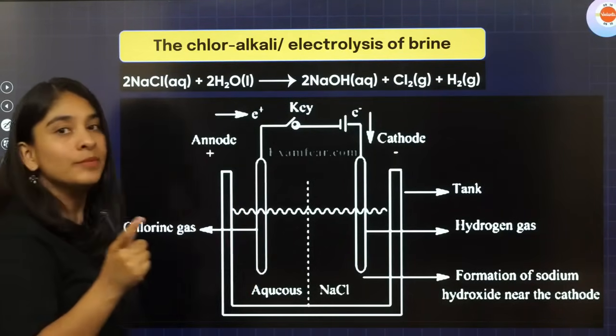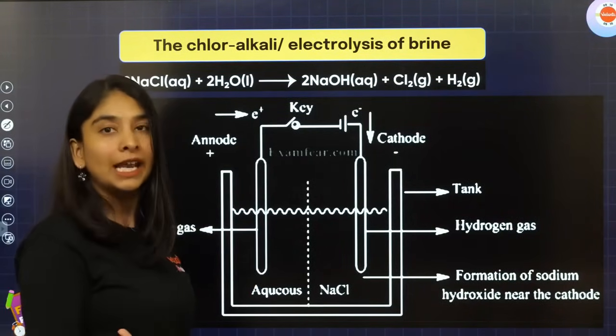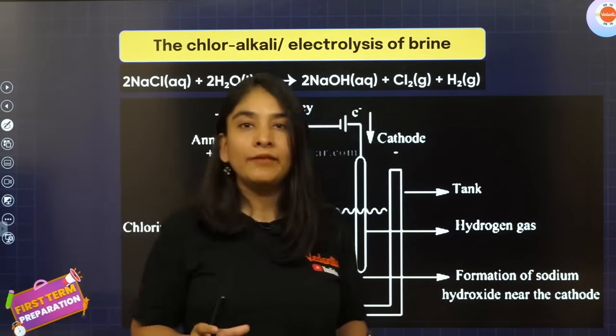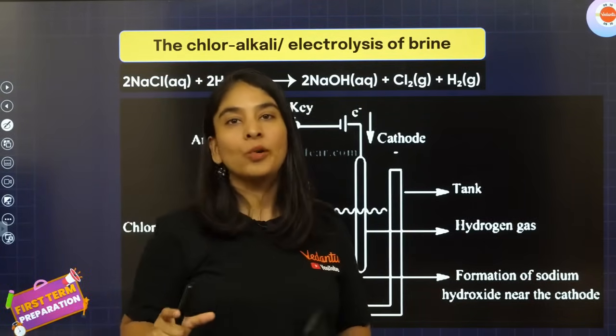Students, Chlor-Alkali process is known as Chlor for Chlorine and Alkali for Sodium Hydroxide because it is an alkali. So what do we create at this commercial level? Sodium Hydroxide and alkali is called Chlor-Alkali.